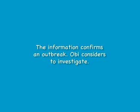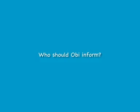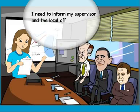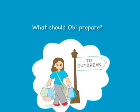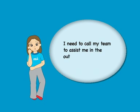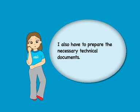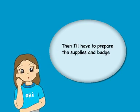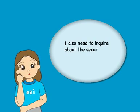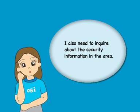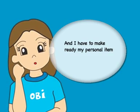Obie considers to investigate. Who should Obie inform? I need to inform my supervisor and the local officials in the area affected. What should Obie prepare? I need to call my team to assist me in the outbreak investigation. I also have to prepare the necessary technical documents. Then I'll have to prepare the supplies and budget. I also need to inquire about the security information in the area. And I have to make ready my personal items as well.